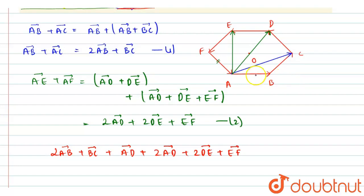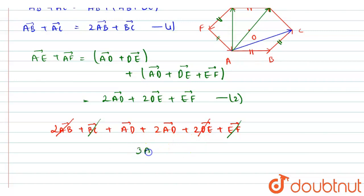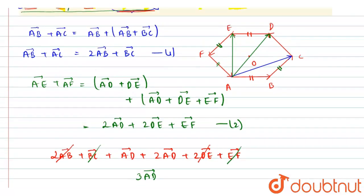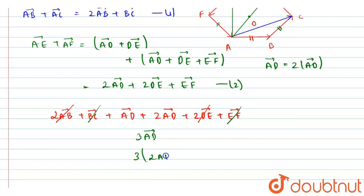From the figure, AB vector and DE vector are equal and opposite, so 2 AB vector and 2 DE vector cancel out. Further, BC vector and EF vector are also equal and opposite, so they cancel out too. We are left with 3 AD vector. Since O is the center, O is the midpoint of AD, so AD equals 2 times AO vector. Therefore 3 AD equals 3 times 2 AO vector, giving 6 AO vector.